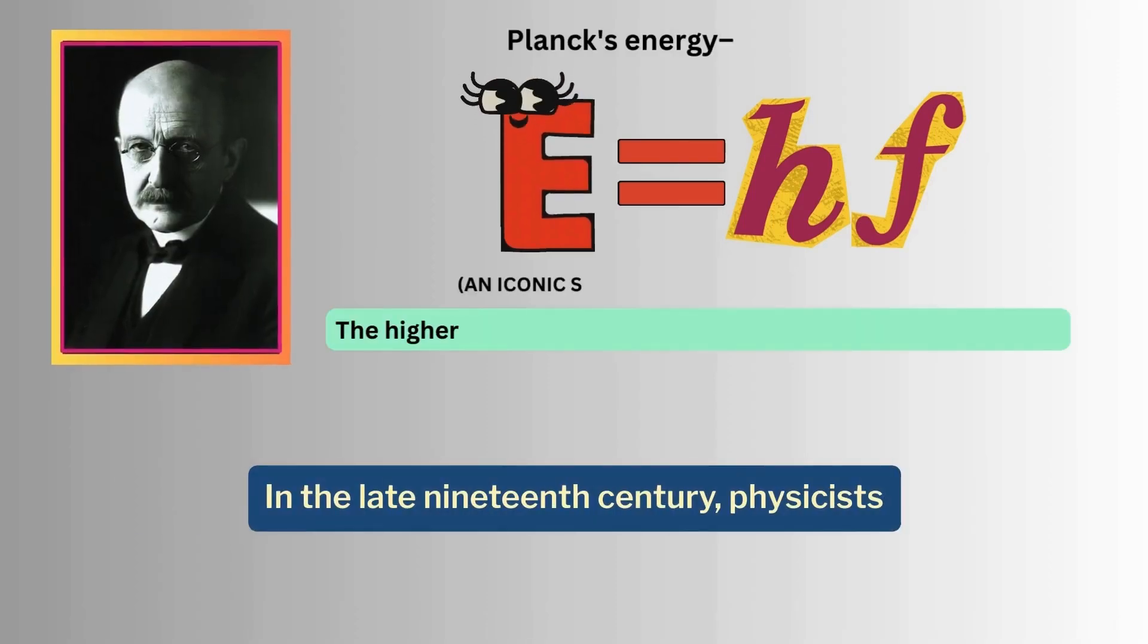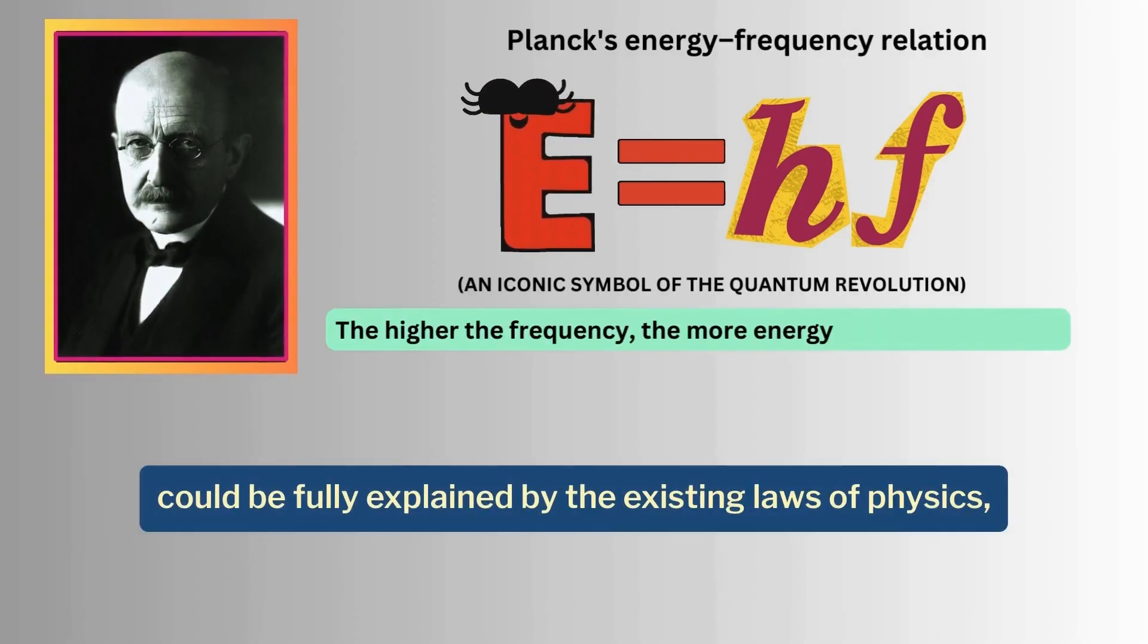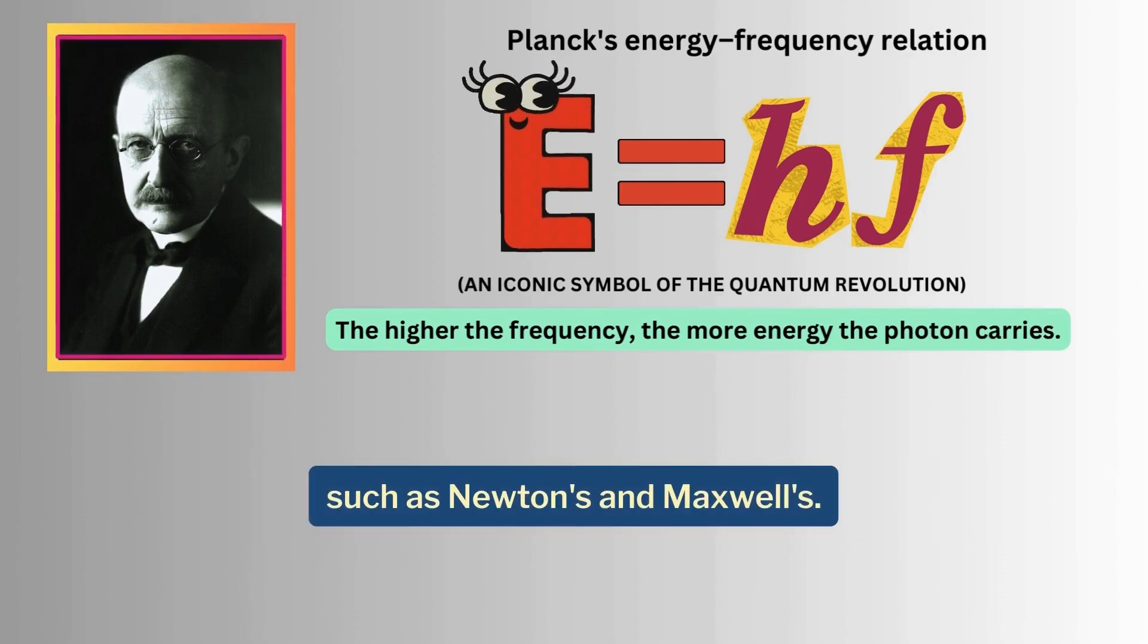In the late 19th century, physicists thought that all natural phenomena could be fully explained by the existing laws of physics, such as Newton's and Maxwell's.